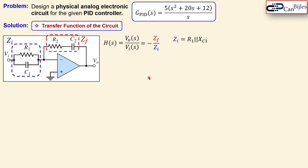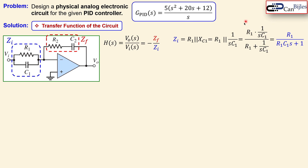For Zi, which is a parallel combination of R1 and C1, we determine the reactance Xc1 = 1/(sC1) in the Laplace domain. Combining them gives: Zi = R1/(R1·s·C1 + 1). For Zf, which is the series combination of R2 and C2, using the Laplace expression for the capacitor reactance, we get: Zf = R2 + 1/(sC2).